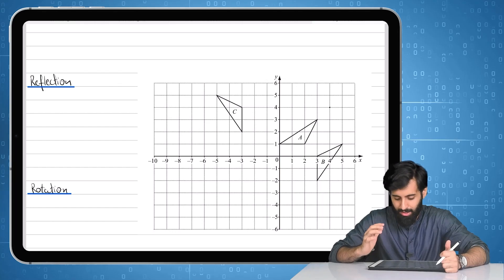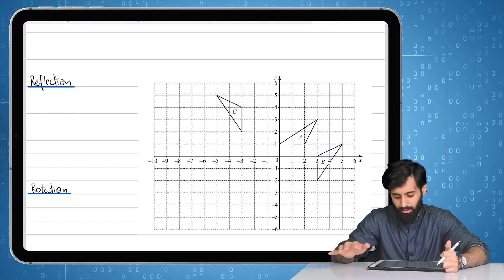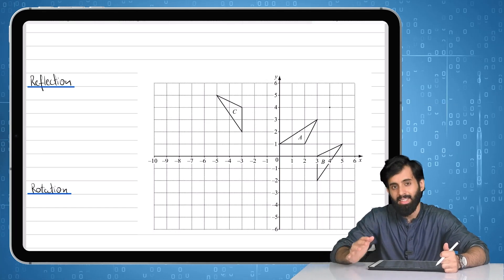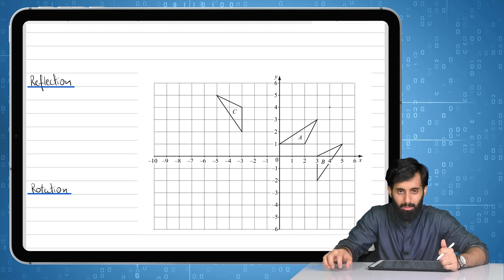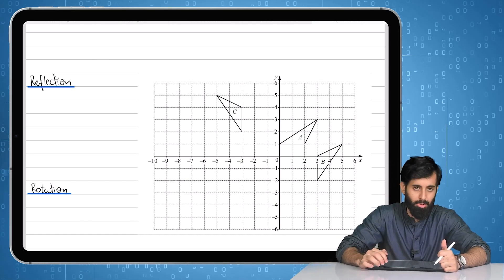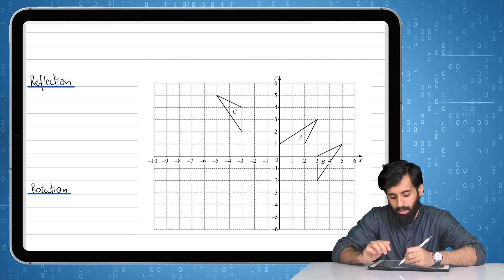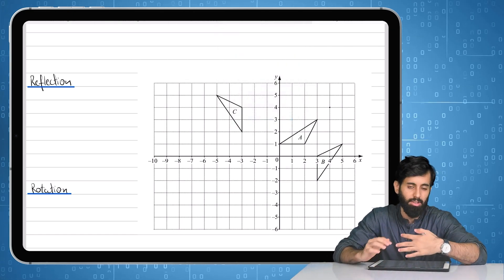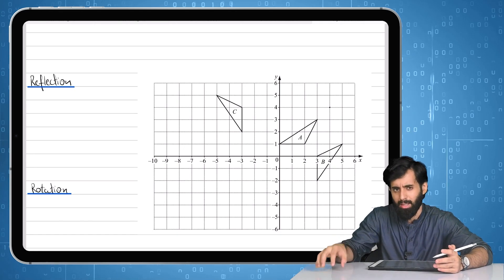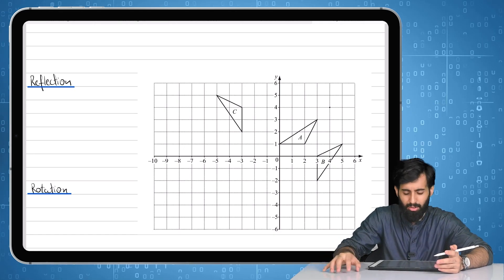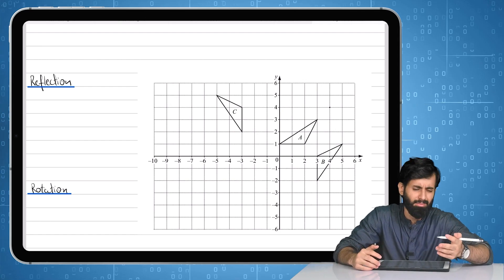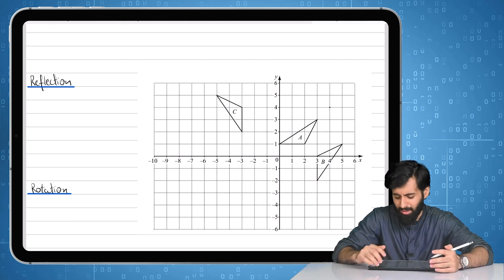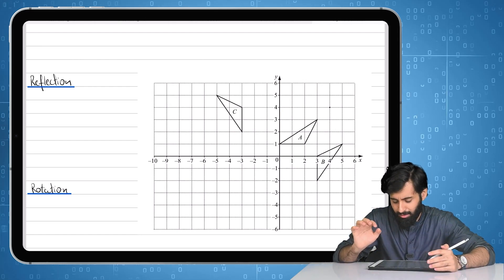So that's exactly what I'm going to discuss right now. I have here an example question, and I should mention that A is the object, B and C are the images. Now one of them is obtained by reflecting A and one of them is obtained by rotating A, and our job is to find out which one is a reflection and which one is a rotation.